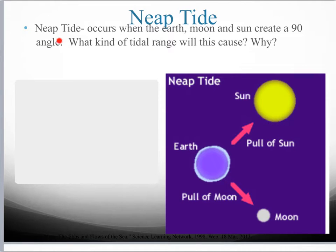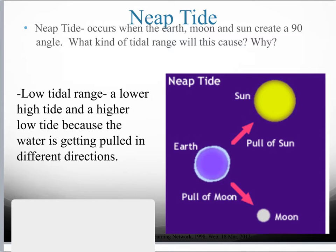The second type of tide is called a neap tide. This occurs when the Earth, the moon, and the sun create a 90-degree or perpendicular angle. The sun is pulling on the water in one direction and the moon is pulling on the water in a different direction, so the gravities are not working together — they're actually working against each other. This causes a low tidal range.